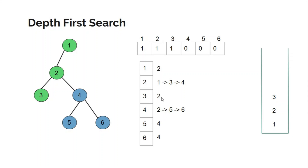In node three's adjacency list, the only connected node is two, which is already visited. So we don't make another recursive call — otherwise it would result in infinite recursion: two calling three, three calling two. Since there is nothing left to explore in node three, its execution completes. DFS three is popped from the stack and we track back to node two. DFS two resumes its execution.